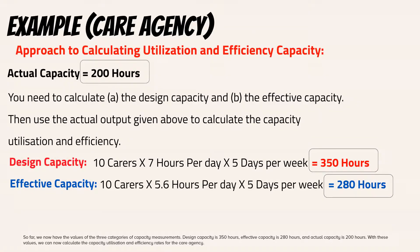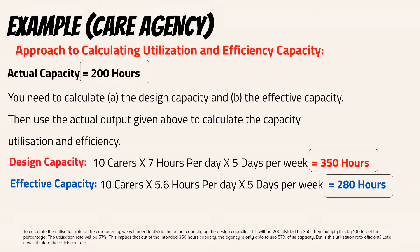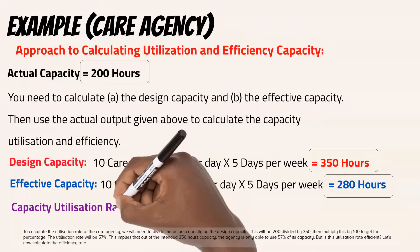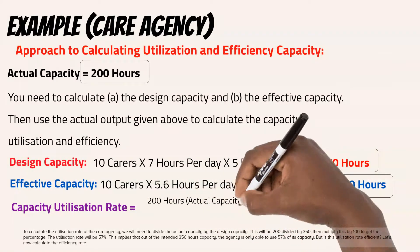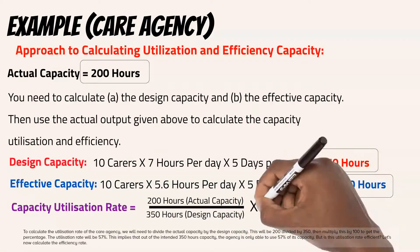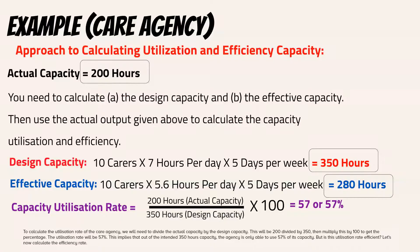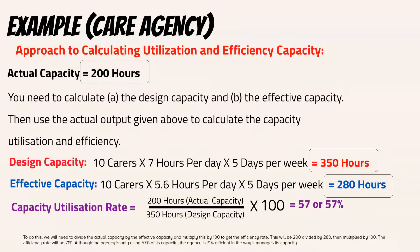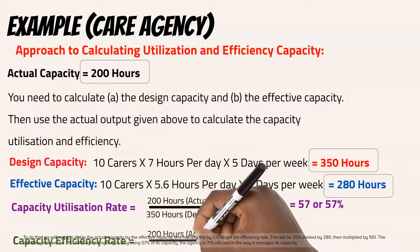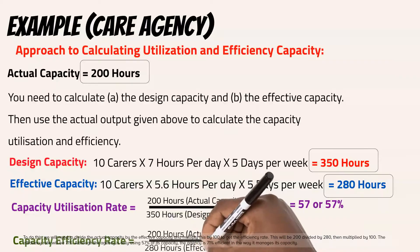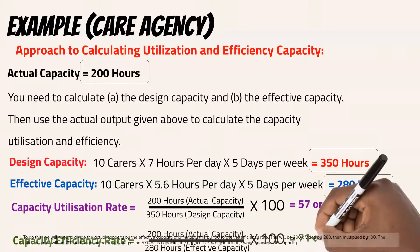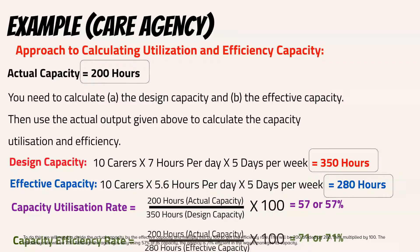With these values, we can now calculate the capacity utilization and efficiency rates for the care agency. To calculate the utilization rate, we divide actual capacity by design capacity: 200 divided by 350, multiplied by 100. The utilization rate is 57%, meaning that out of the intended 350 hours, the agency is only able to use 57% of its capacity. To calculate the efficiency rate, we divide actual capacity by effective capacity: 200 divided by 280, multiplied by 100. The efficiency rate is 71%. So although the agency is only using 57% of its capacity, it is 71% efficient in the way it manages its capacity.